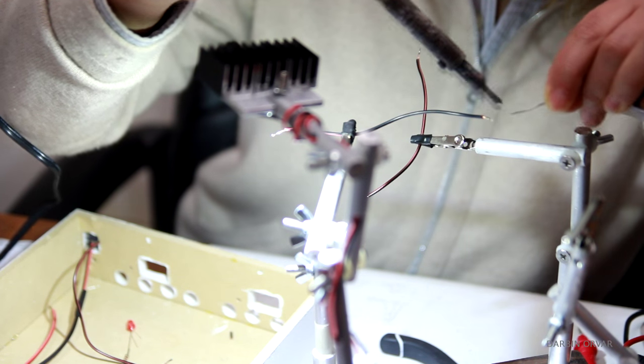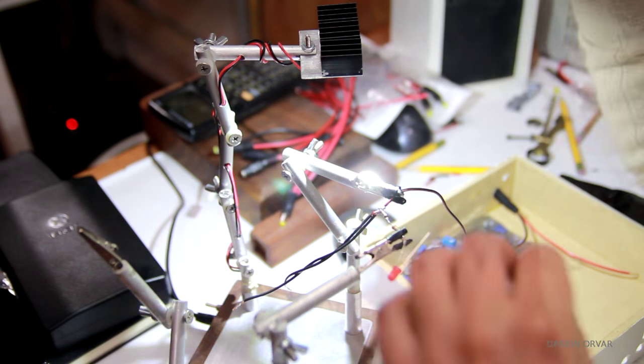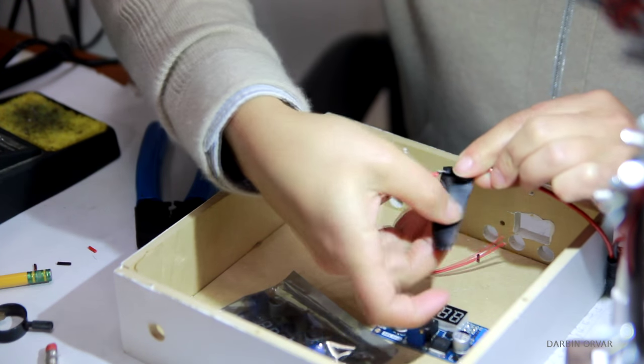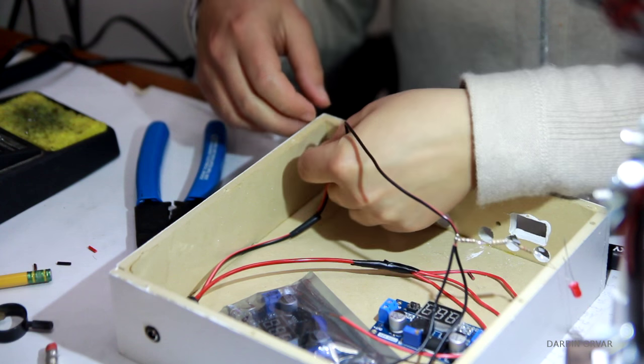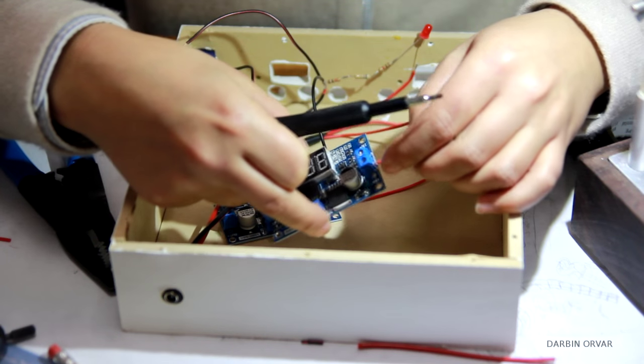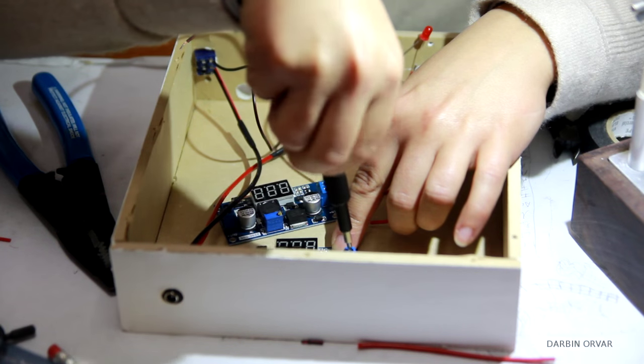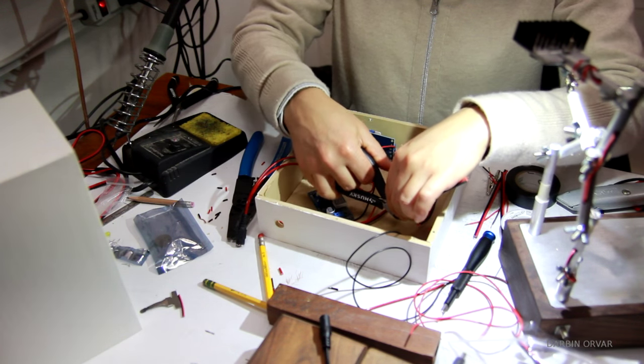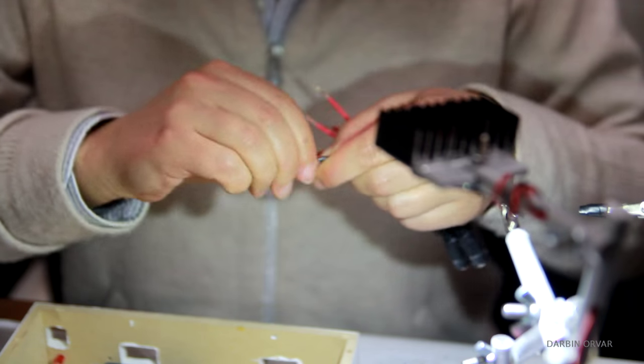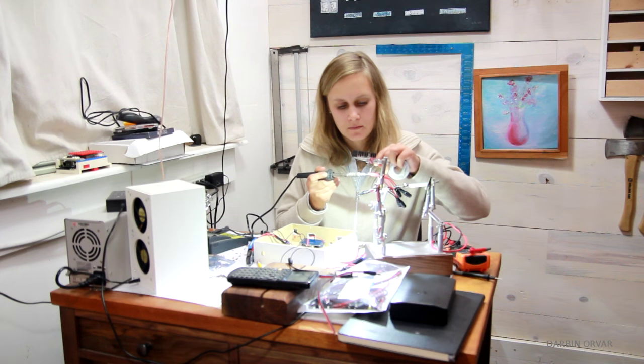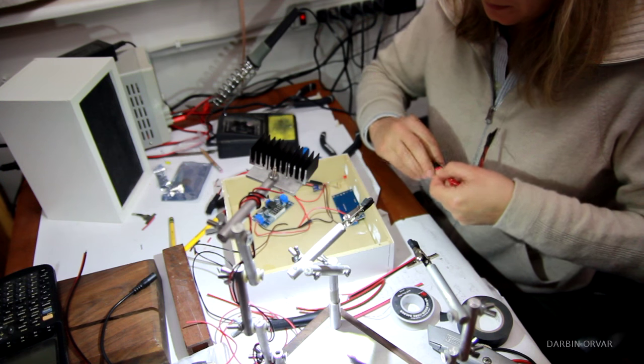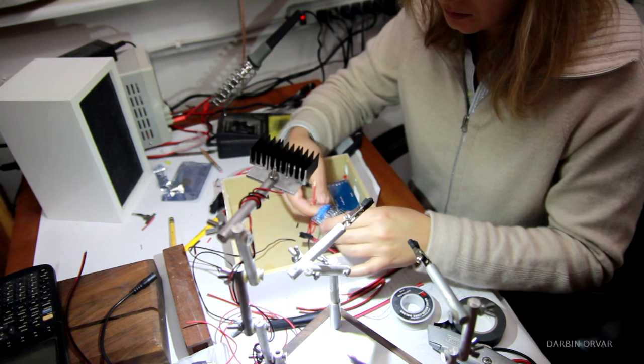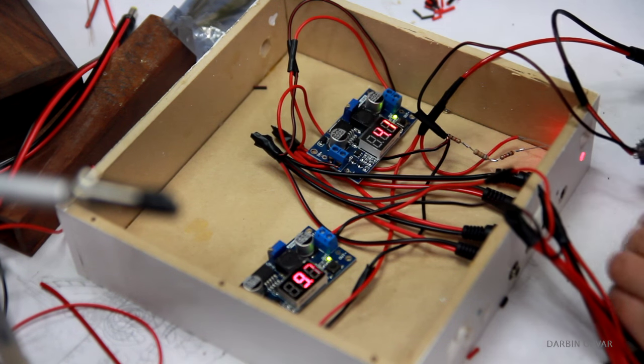Then soldering everything together. A lot of people don't like soldering, but it's really easy and fun. Plus, as you make more projects, you get more practice. Just putting the wires into the voltage regulators. Putting in the plugs, cutting the cords, separating them, and doing a little more soldering. Hooking this up here, and making sure it works.